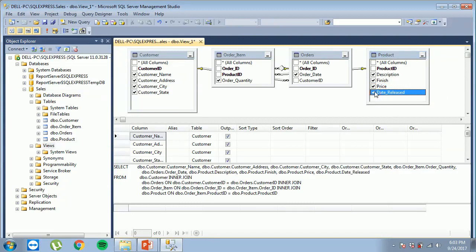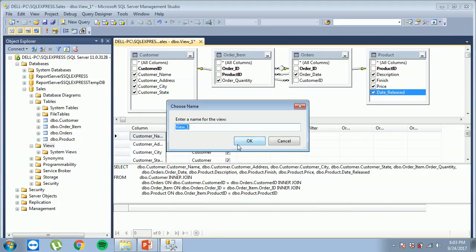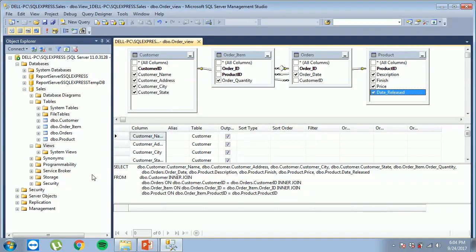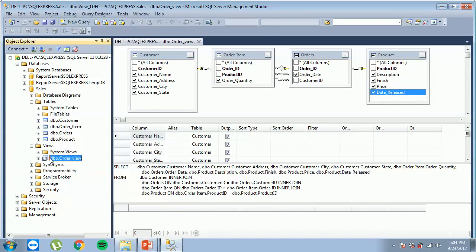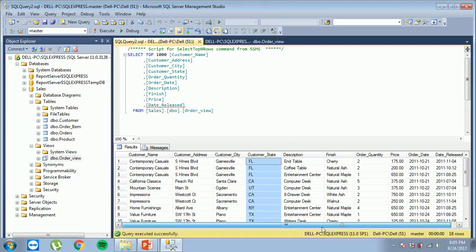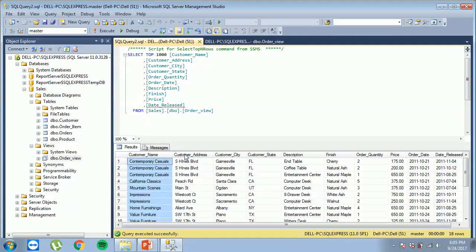So now, we can save our order data view. We name it order view. So now, we will try to check our data view. As you can see, we have now the customer, all the other details of the customer, and also the details of their ordered products. So that's it.